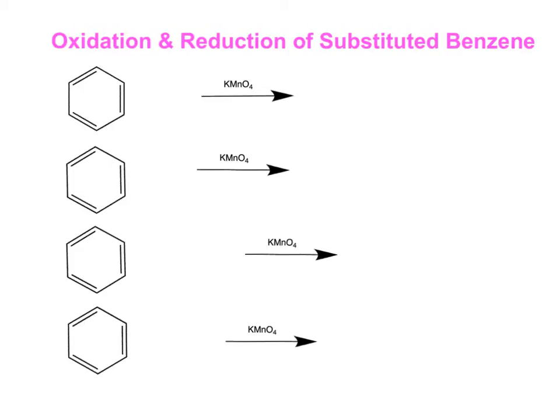An easy way we can define oxidation as it occurs in organic chemistry is a decrease in the number of carbon-to-hydrogen bonds. KMnO4, which is known as potassium permanganate, is a great oxidizer and is used in a lot of oxidation reactions.